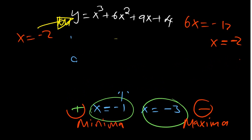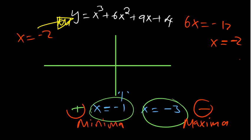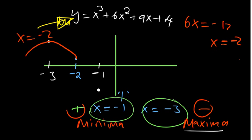This is important when sketching a graph — it makes things faster and easier. We know we have a stationary point at x = -1 and another at x = -3. You can substitute into the function to get the y-coordinates. We know x = -3 is a maxima, so it appears higher on the curve, and x = -1 is a minima. The point x = -2, in between, is the point of inflection.